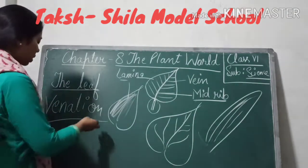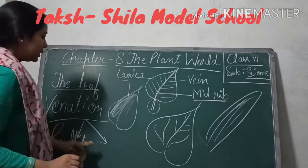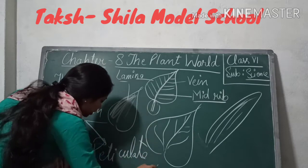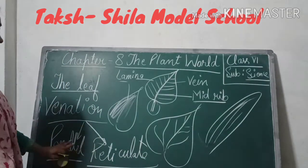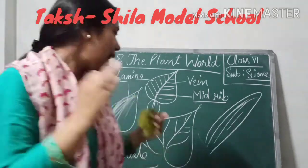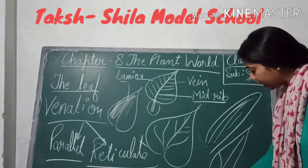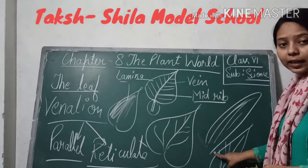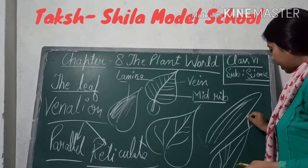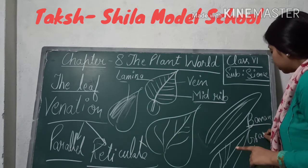Venation is of two types. First is parallel venation, and second is reticulate venation. In parallel venation, the veins start from the petiole and go straight to the edge of the leaf. That is known as parallel venation. Examples include banana leaves and grasses, both of which have parallel venation.